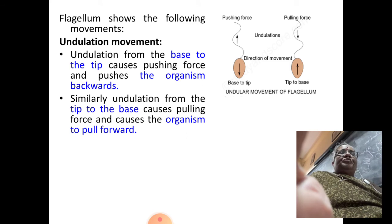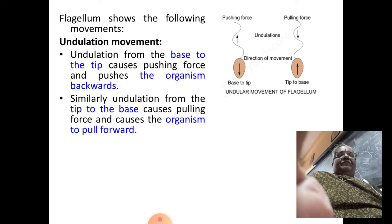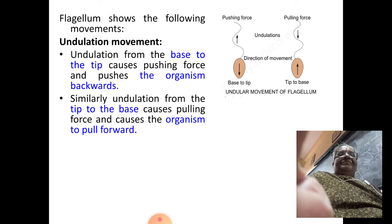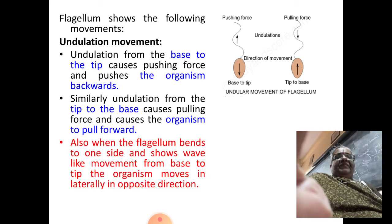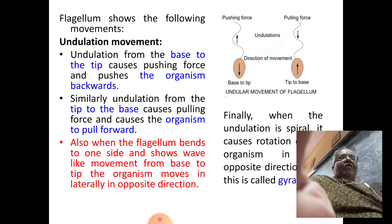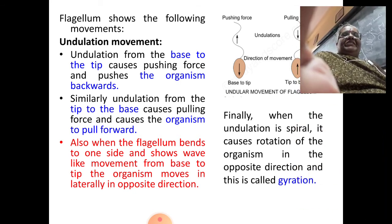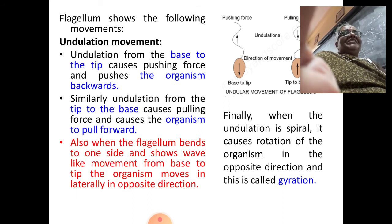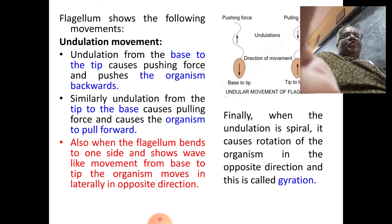Undulation from tip to base causes a pulling force and causes the organism to move forward. Also, when the flagellum bends to one side and shows wave-like movement from base to tip, the organism moves laterally in the opposite direction. Finally, when the undulation is spiral, it causes rotation of the organism in the opposite direction, and this movement is called gyration.